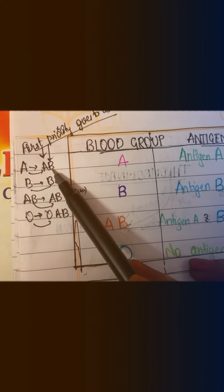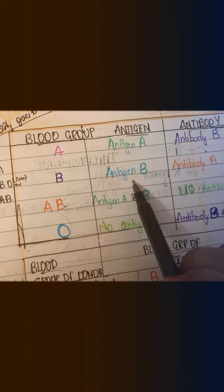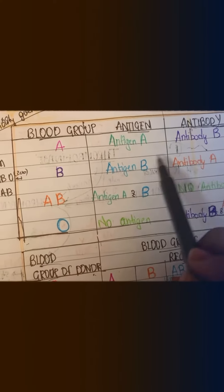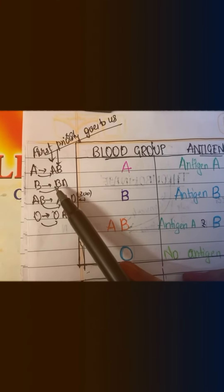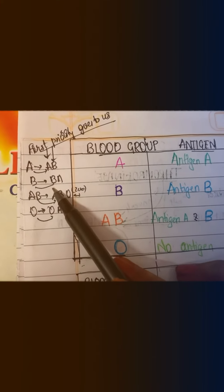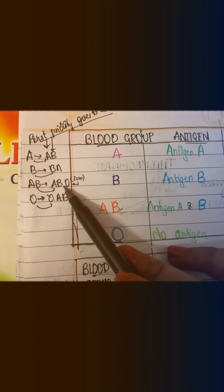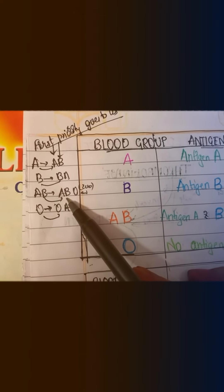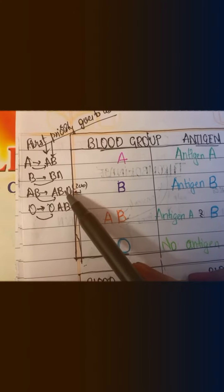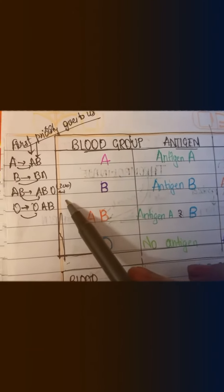Coming to B, it has antigen B and antibody A. Remember, B will give priority to only B. Then AB gives priority to AB — it has both antigen A and antigen B, and no antibodies, therefore zero antibodies.